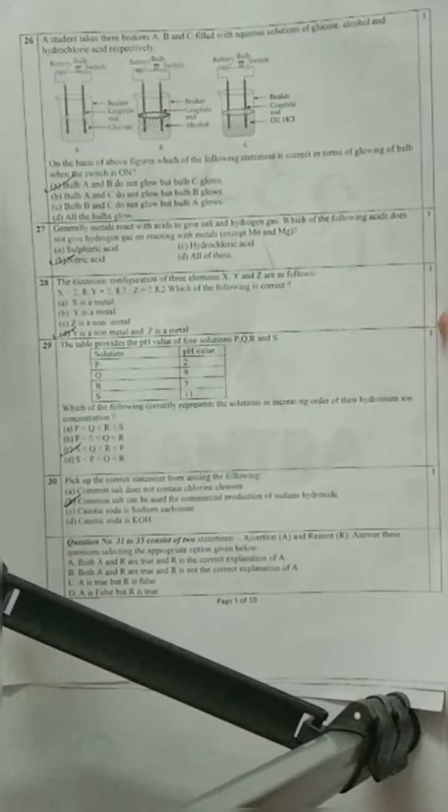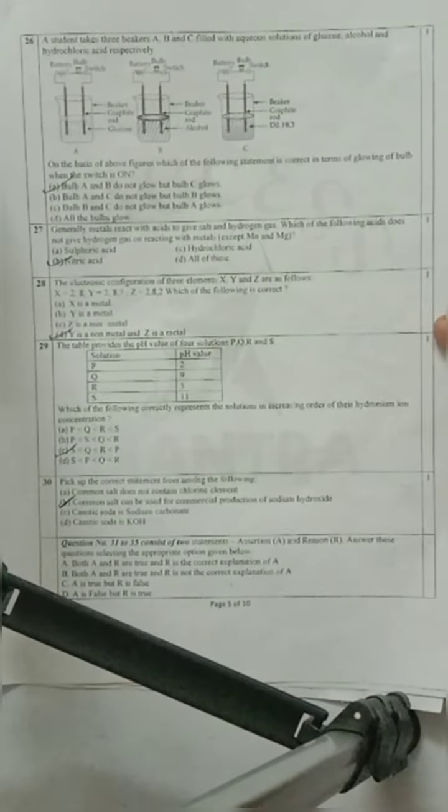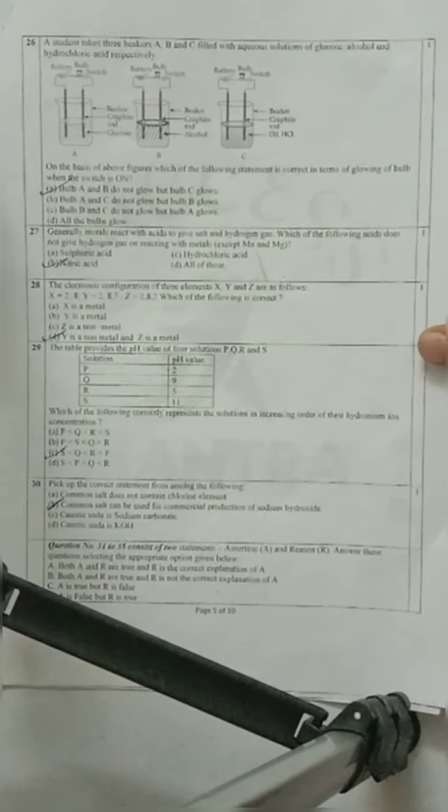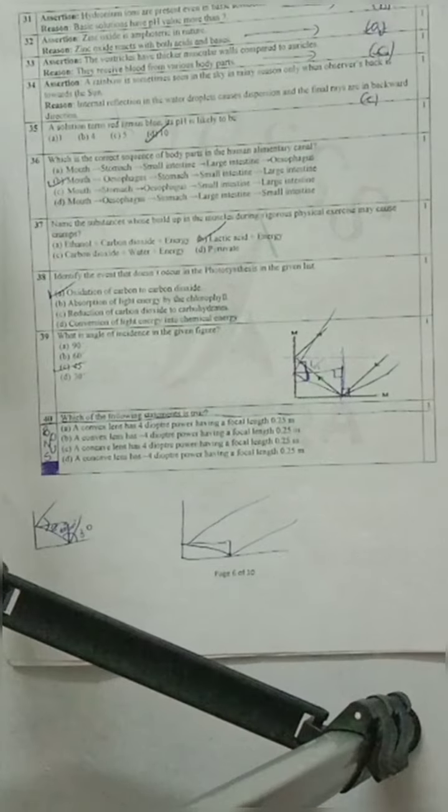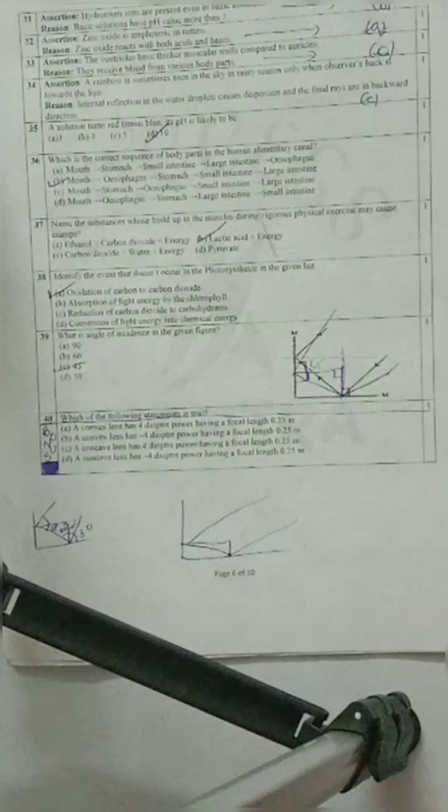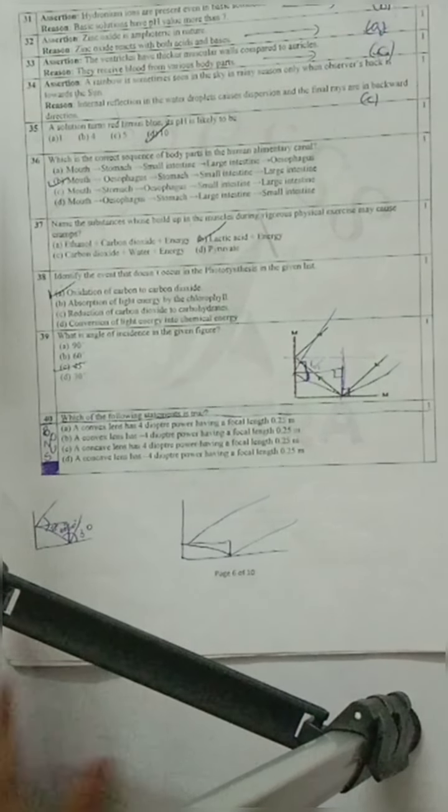Questions 31 to 35 are all assertion and reason questions. Question 31: Assertion - Hydronium ions are present even in basic solution. Reason - Basic solutions have pH value more than 7. Both are correct, but reason is not a correct explanation of assertion.